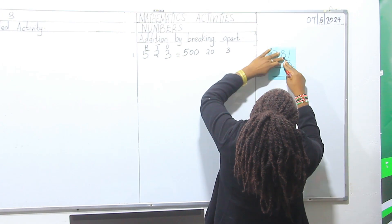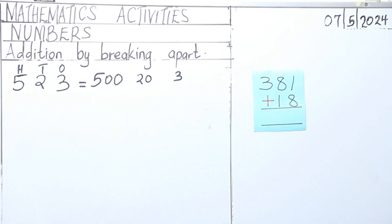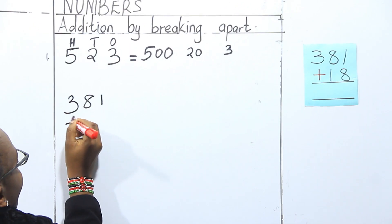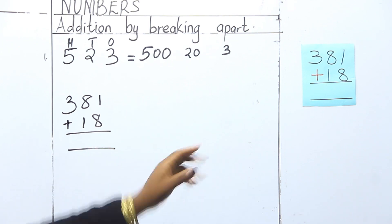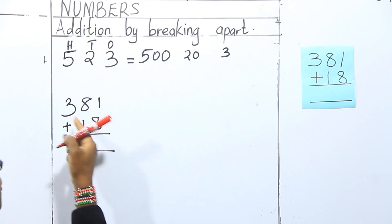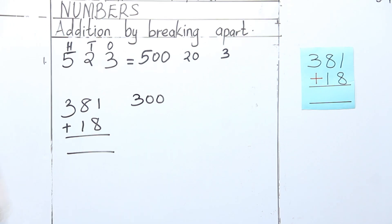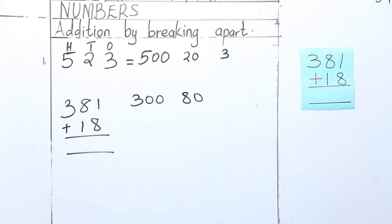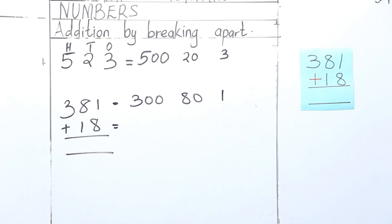Let me pull it here so you can all see. Our sum is 381 plus 18. The first thing we do is break these numbers. Let's break 381: we start with three — this will be three hundred. Then we go to eight, which is in the place of tens, so this is going to be eighty. Lastly, we have one.